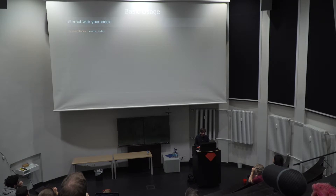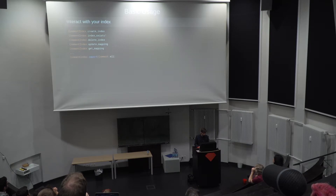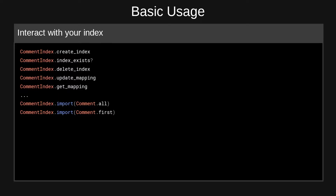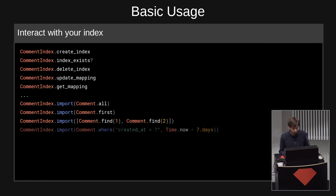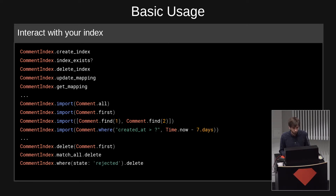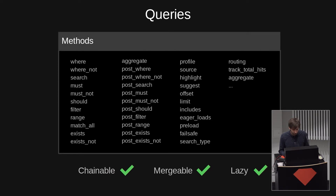Now that we've built our index, we can play with it: creating the index, asking if the index exists, deleting the index, updating its mapping, getting the mapping, and all these kinds of things. Then we import some records — I'll rush through these since if we have time at the end I will show you in a console as well. We can import all records, only one record, arrays of records, or arbitrary ActiveRecord relations. The same goes for deletions of records or documents, where we can simply use the same queries we use for creating the indexes.